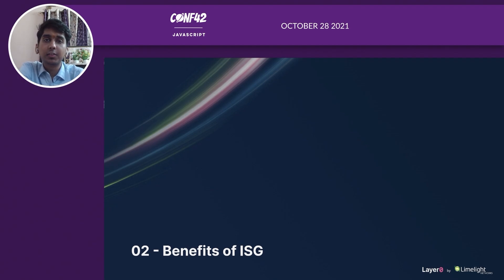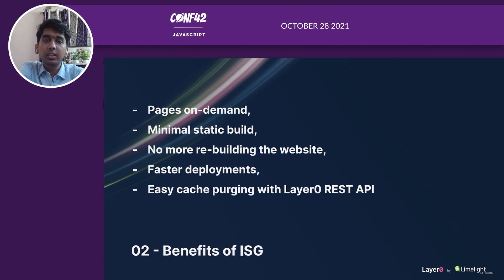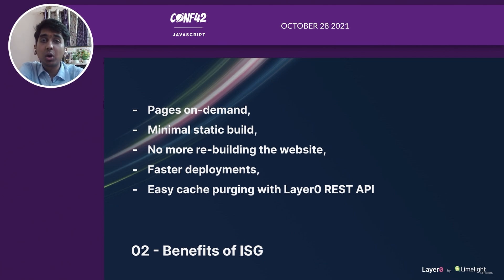Now let's look at some benefits. With ISG, you can create pages on demand — you don't need to redeploy your website anymore, and you don't need to pre-render your pages. With Layer 0, you can choose to keep cache or invalidate it between deployments. Or if you want to invalidate a specific page, you can use Layer 0's console or the REST API to invalidate cache based on regular expressions.